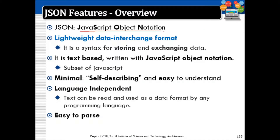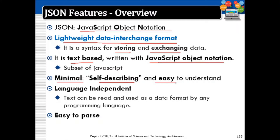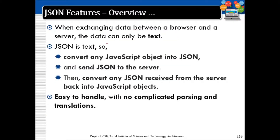JSON is the JavaScript Object Notation. It is a lightweight data interchange format, similar to XML. It is a syntax for storing and exchanging data. It is text-based and written using JavaScript object notation. Its features include being minimal, self-describing, and easy to understand.